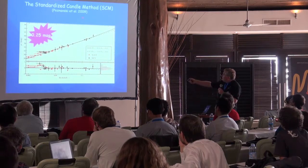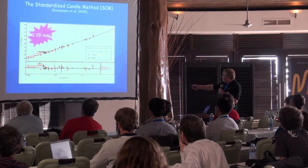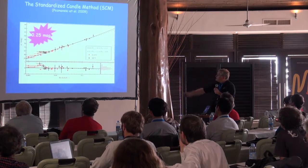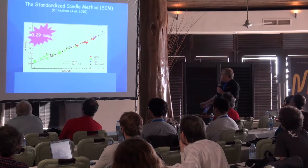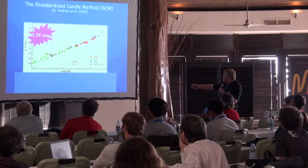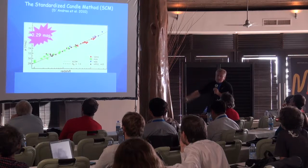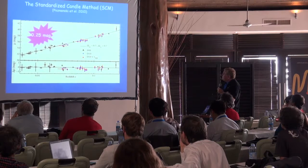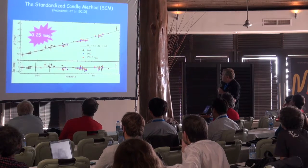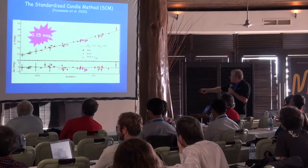Poznanski in 2009, using the KAIT sample, obtained a similar Hubble diagram. Olivares as well, using low-redshift ones and including supernovae up to redshift 0.2, again gets the Hubble diagram with similar dispersion. Poznanski again obtained the same kind of result up to redshift of almost 0.2.